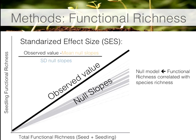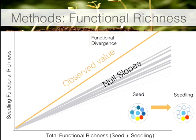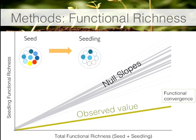We could have two different results. A positive standardized effect size would indicate that functional richness at the seedling stage is higher than expected by chance given the observed species richness, supporting the functional divergence hypothesis — an increasing total range of functions from seed to seedling. Alternatively, a negative result would indicate functional richness at the seedling community is lower than expected by chance, supporting the functional convergence hypothesis — a decreasing total range of functions from seed to seedling.